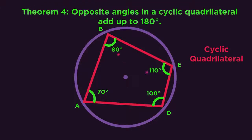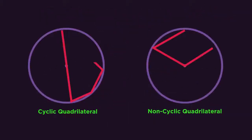I'm sure you all spotted that the opposite angles add up to 180 degrees. So that's our fourth theorem. And the important part to remember is that all four sides must be touching the circumference for it to be a cyclic quadrilateral.